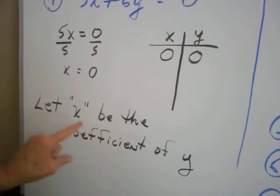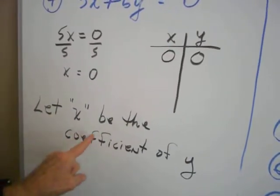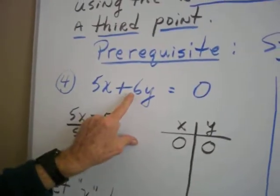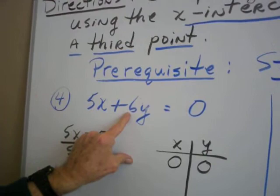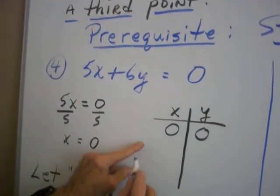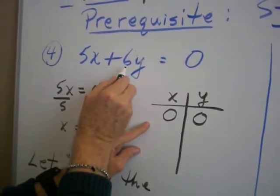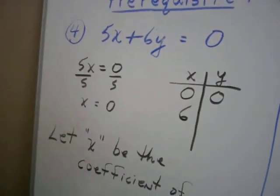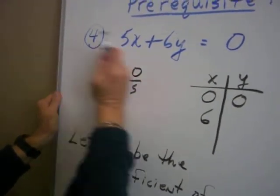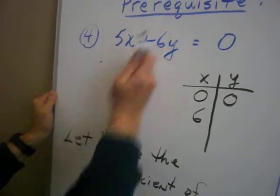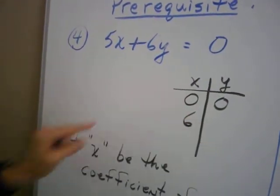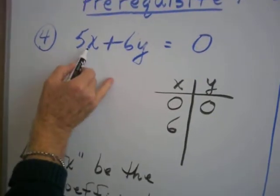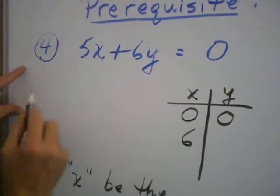We're going to let X be the coefficient of Y. The coefficient of Y is positive 6, so we're going to let X equal 6. And now to get the corresponding value of Y, we're going to substitute this X value of 6 in place of X in this equation, and we'll get our Y.